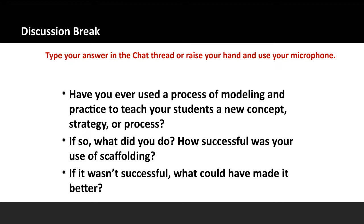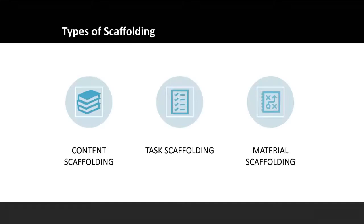Let's talk about some different types of scaffolding you might use with students — three types: content scaffolding, task scaffolding, and material scaffolding. When we scaffold learning, we use a variety of supports as students progress through a task. We want to choose the strategy or type of scaffolding that best supports student learning and our instructional goals. Content scaffolding is where the instructor chooses familiar or easier content to help students learn a new skill, allowing students to focus on skill building rather than being distracted by unfamiliar content. For example, you might let students choose their own topic as you teach them how to use a particular writing strategy, then apply that strategy to more complex subject matter.